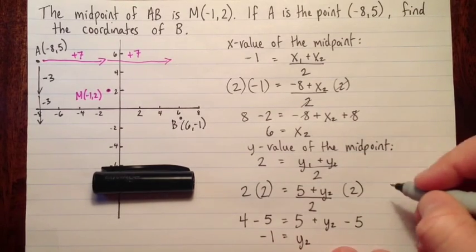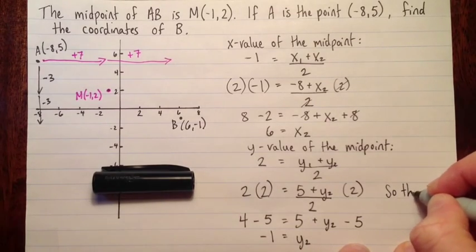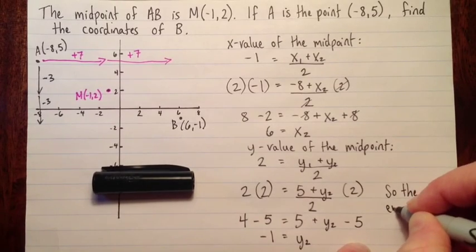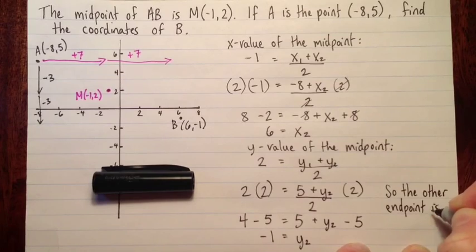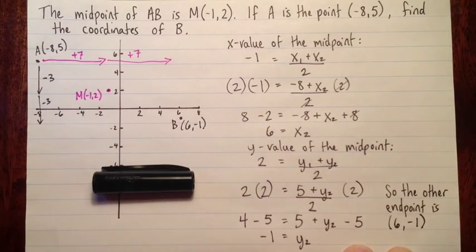Now we're just about to write a concluding sentence. So the other endpoint is (6, -1).